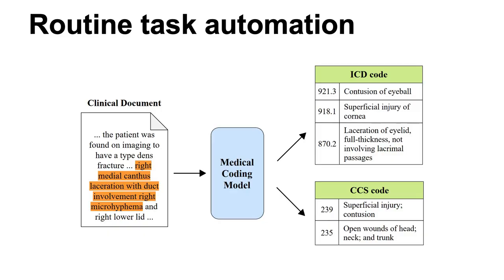There are many types of routine tasks that might be automated using machine learning and artificial intelligence. Here we see a clinical document, some free text notes. All types of documents are produced when patients visit hospitals. We've developed a so-called medical coding model. It's a neural network that can assign to such free text notes some numerical diagnosis codes. This ICD code, as well as the CCS code, they are just numbers for different diagnoses, which can be extracted automatically from such free text clinical notes. Of course we might extract other useful information from such clinical notes, not only diagnosis.